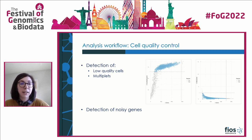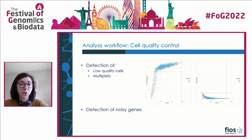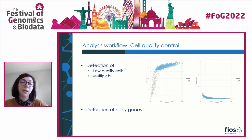As with any dataset, the first step for analysis is quality control — mainly quality control of the cells to remove low quality cells and multiplets. The main metrics we use to evaluate cell quality are the number of detected genes per cell, the number of detected housekeeping genes per cell, and the percentage of mitochondrial genes.